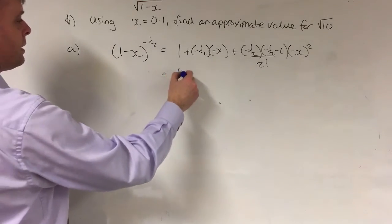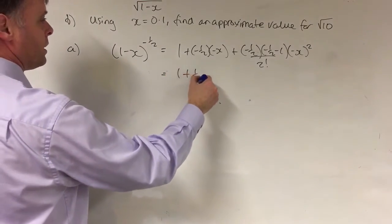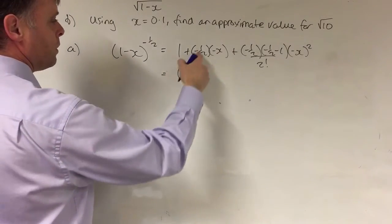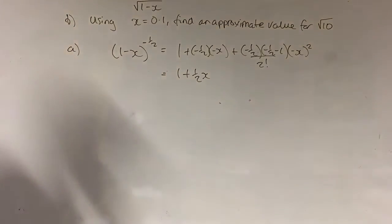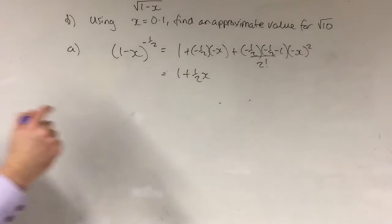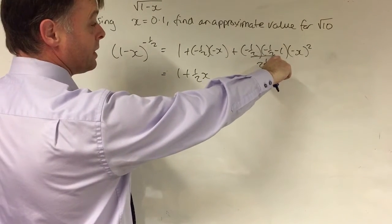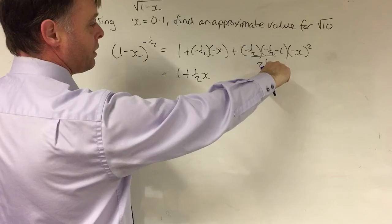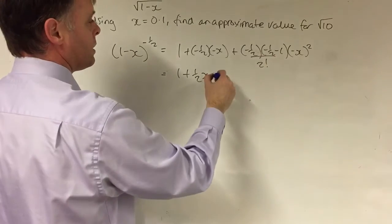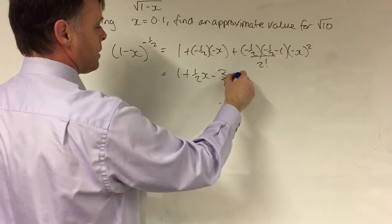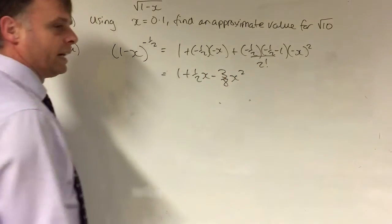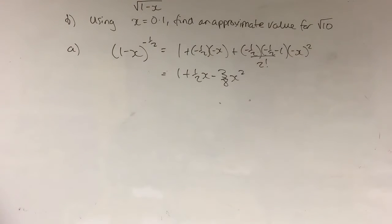We don't need any of the other terms because it says we can stop at that point. It's just now a case of simplification. Minus one half times minus x gives plus one half x; minus one half times minus three over two is minus three over four, so it's minus three over eight x squared. That's the standard part of the question — the bread and butter three or four marks.